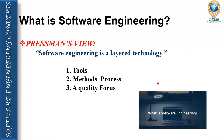Based on Pressman's view, software engineering is a layered technology. According to his definition, software engineering consists of tools, methods, process, and a quality focus — through which we are able to process our software to produce a quality product.